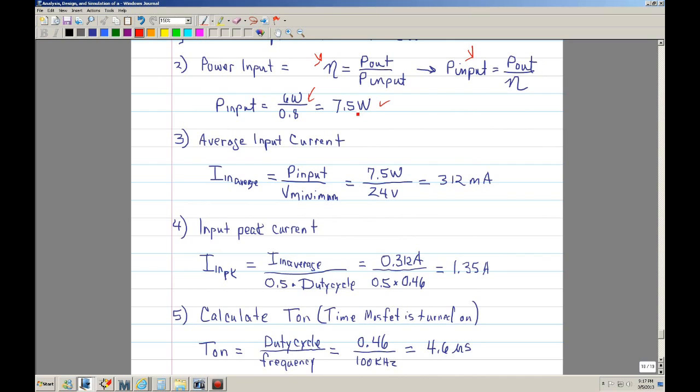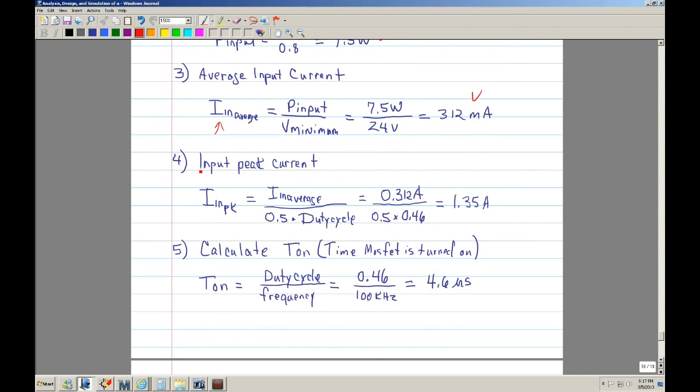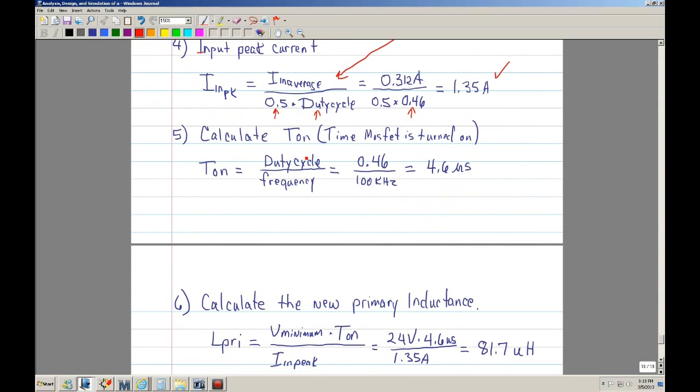Then the third step we use the power input and divide it by the minimum input voltage. And that will give us our input average. In this case, I got 312 milliamps. So once we have that, we want to know, or we want to calculate what the input peak current is. Plug that up here, which is the input average. And this is a constant. It's not the duty cycle. It's 0.5. And here is the duty cycle. So in this case, it's 0.46. That's the duty cycle that we're using from the UC 1844. So now we end up with a peak current of 1.35 amps.